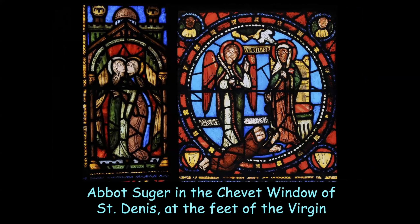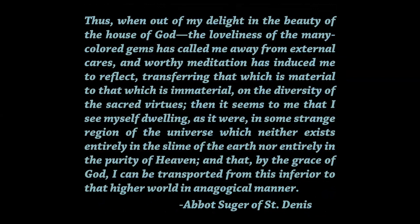Suger had himself depicted a couple of times in his own stained glass windows — there he is at the bottom, at the feet of the Virgin Mary in an Ave Maria scene. Notice how he breaks the frame of the circular medallion: his feet are outside with us down in this world, but his head is up there in the mystical realm at the feet of the Virgin Mary. This was very much on purpose. Writing about the effect of his church, we have a rare example of a thoughtful medieval writer describing the effects of art and aesthetics on a person.